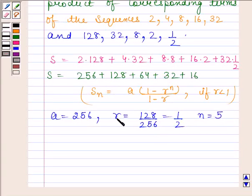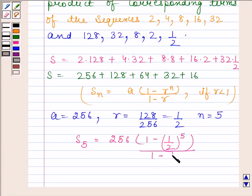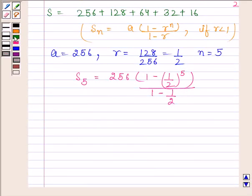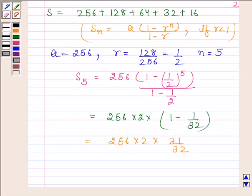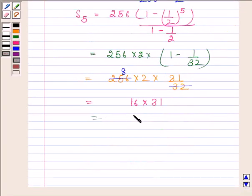Now, by substituting the value of a, r and N in this formula, we get S_5 is equal to 256(1-(1/2)^5)/(1-1/2). Now, this is equal to 256 into 2 into (1-1/32) and this is equal to 256 into 2 into 31/32. So, on dividing 256 by 32, we get 8, so this is equal to 16 into 31 and 16 into 31 is 496.